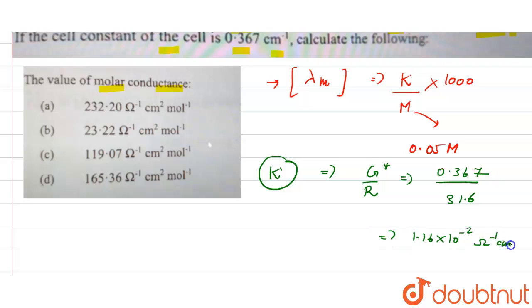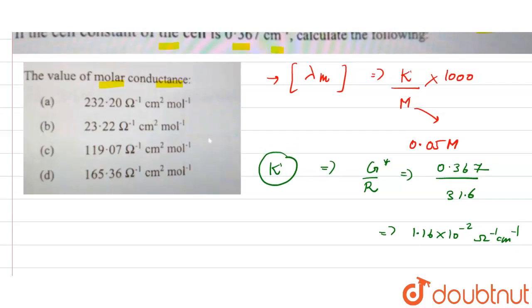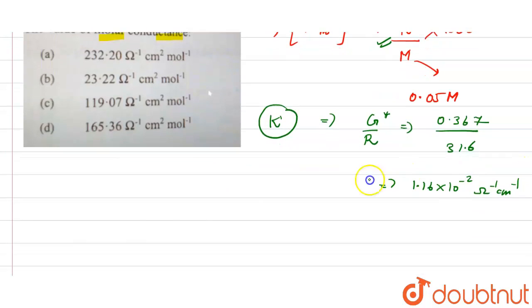Now we have calculated value of the specific conductance. Now I will put this value in the formula of molar conductance. This is 1.16 into 10 raise to the power minus 2 divided by 0.05.